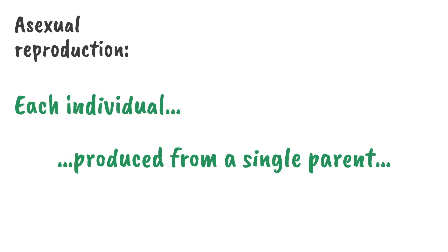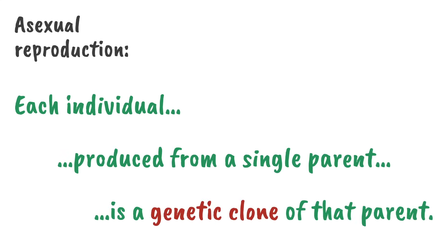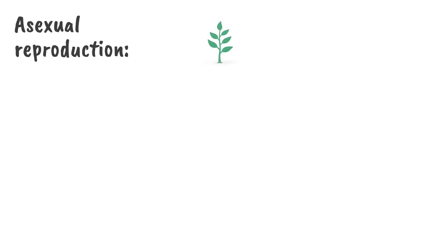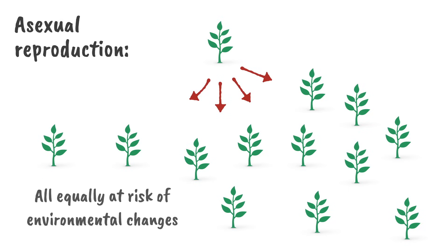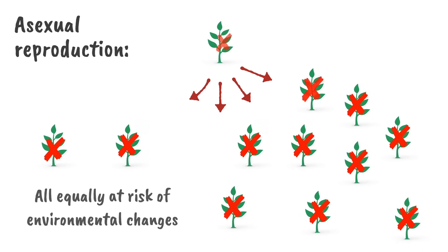Looking at asexual reproduction, remember that each individual produced from a single parent is a genetic clone of the parent. If this population of plants were produced from a single individual via asexual reproduction, they would all be equally at risk of environmental changes. This population is less resistant to environmental change because any change in conditions that kills one individual is more likely to kill all of them.